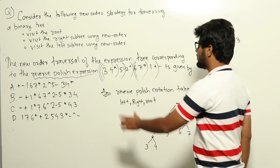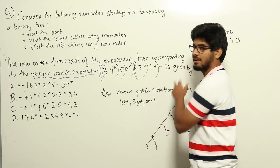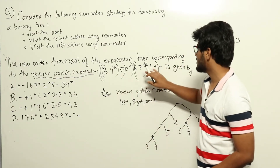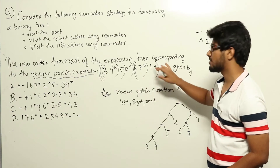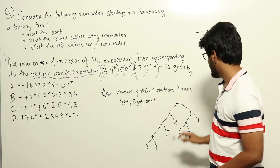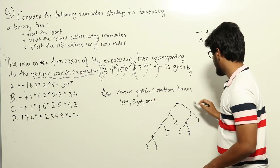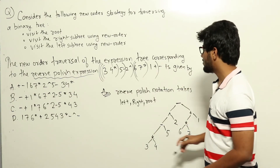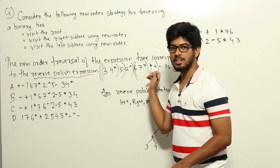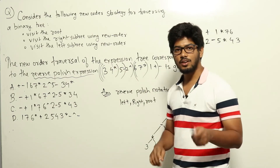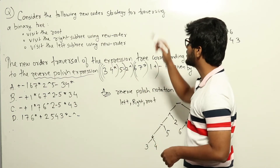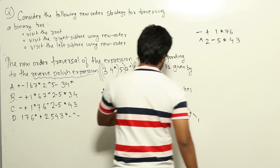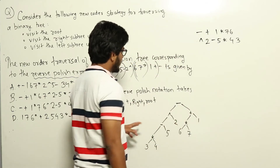Now we have two expressions together and then minus — meaning this is the left subtree, this is the right subtree, and this is the root, which I have drawn here. So this is the complete tree for the expression given. Now we will try to find out what the new order traversal of this tree will be.